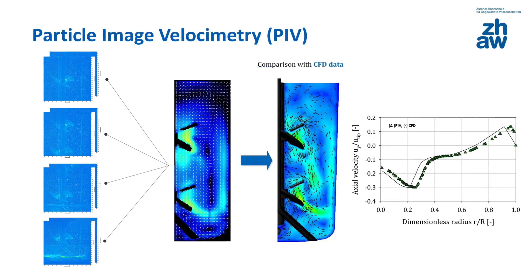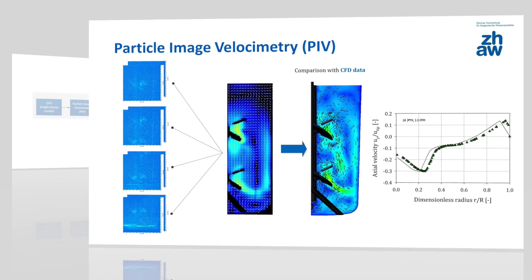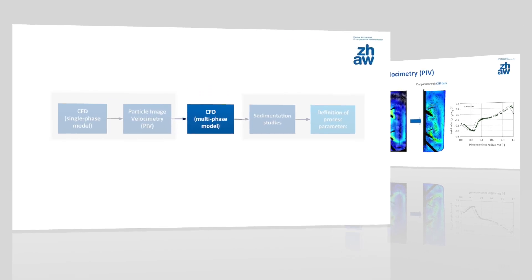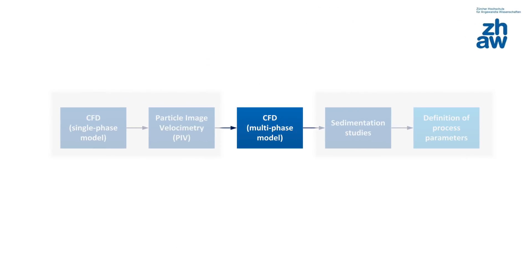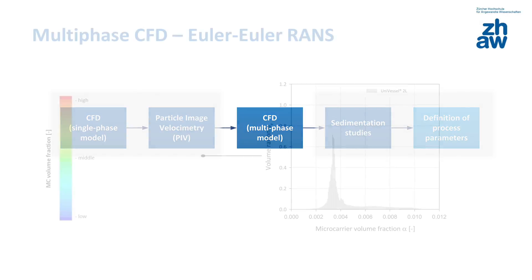The results of the PIV measurements are qualitatively and quantitatively compared with the CFD-predicted fluid velocities. If experimental data are in good agreement with the CFD simulations — in other words deviations are below 10% — the CFD model can be extended by considering the microcarriers as solid phase.